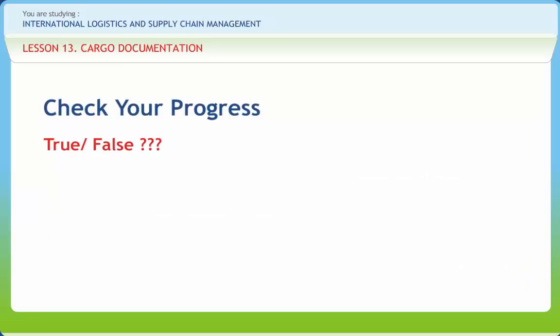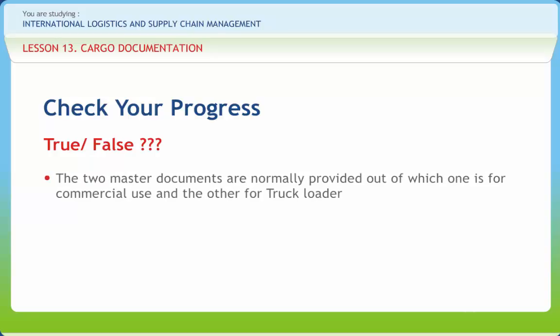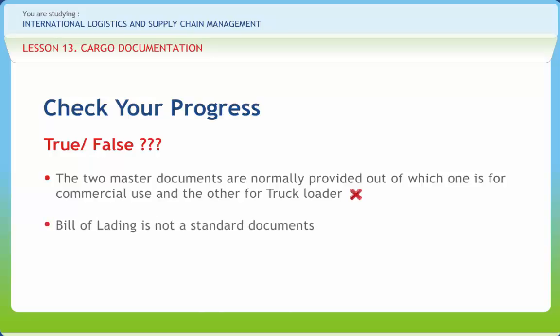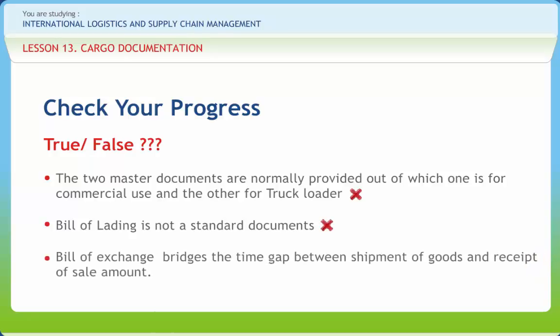Now let us check if we have understood the various concepts discussed in this lesson clearly. The two master documents are normally provided, out of which one is for commercial use and the other for regulatory documents. Right or Wrong? Wrong. Bill of Lading is not a standard document. Right or Wrong? Wrong. Bill of Exchange bridges the time gap between the shipment of goods and the receipt of sale amount. Right or Wrong? Right.